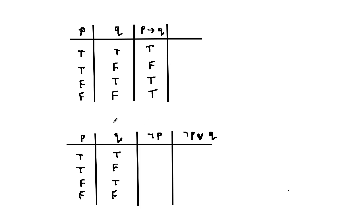Now let's move to the second table. For NOT P, we look at the column for P and just take the opposite truth values. Now for NOT P or Q, we look at the columns for NOT P and Q and make sure that at least one of these is true. So that's true; this is false; here one of them is true, so that's true; and the last row, one of them is true. Comparing the column for P arrow Q and the column for NOT P or Q, notice we have the same truth values: TFTT and TFTT.